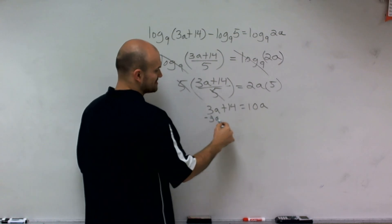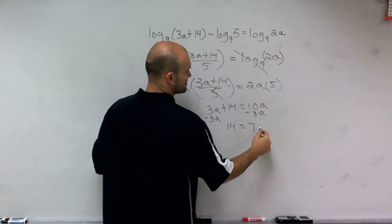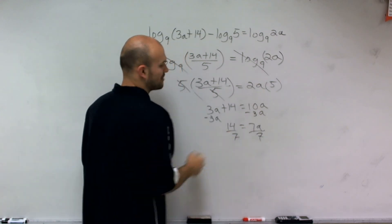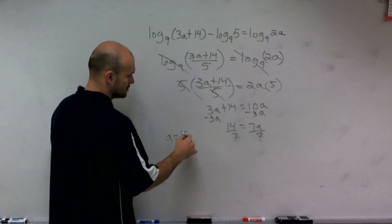Now I get my variables on the same side by subtracting 3a. And therefore, I get 14 equals 7a. Divide by 7 using the division property of equality. And my final answer is going to be a equals 2.